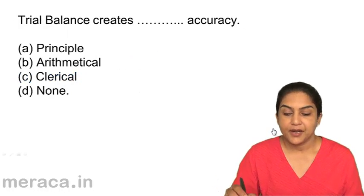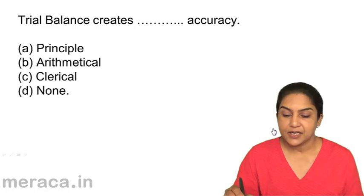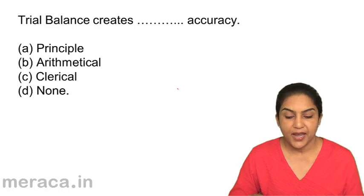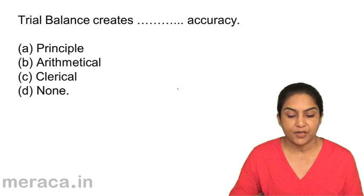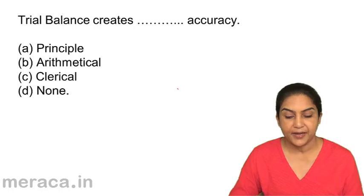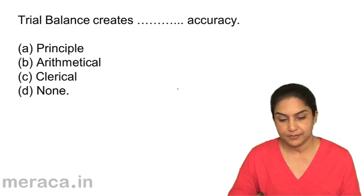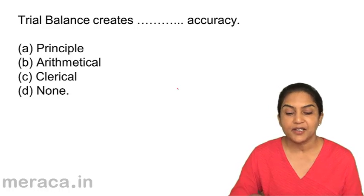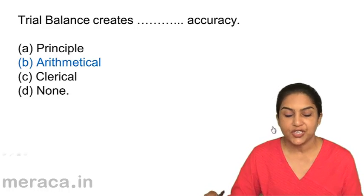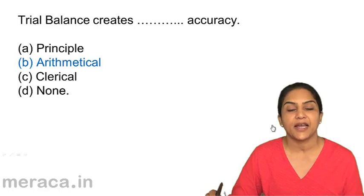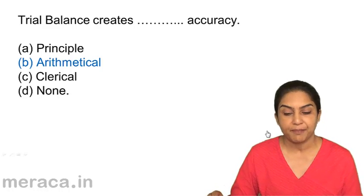Trial balance creates what kind of accuracy? A, principal accuracy; B, arithmetical accuracy; C, clerical accuracy; D, none. Trial balance creates arithmetical accuracy — it ensures arithmetical accuracy. Correct answer is B.